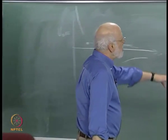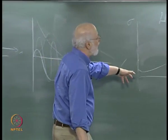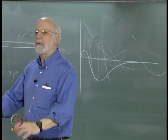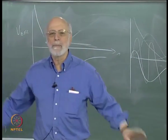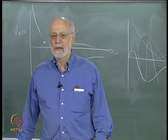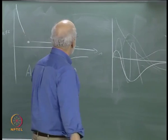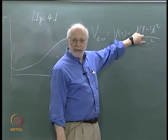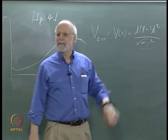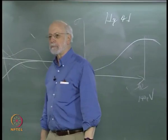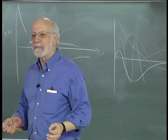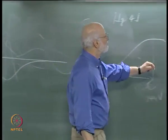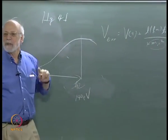This business of a delayed maximum is ubiquitous — it's all over the periodic table. The only case you don't see it is for a P → S transition, because for S (L=0) you don't have this centrifugal barrier. And with this very simple model, you can explain this phenomenology.